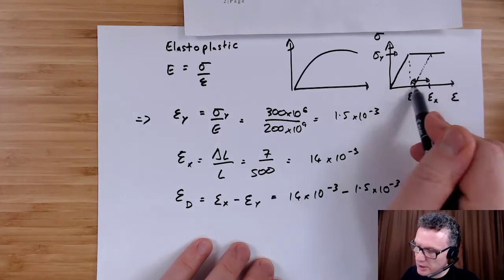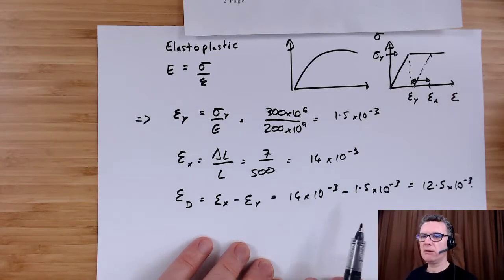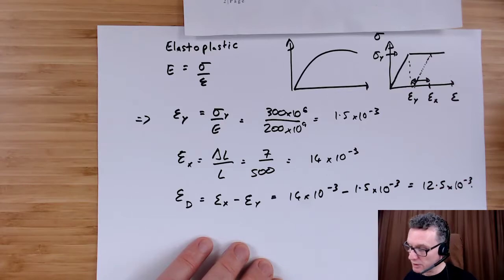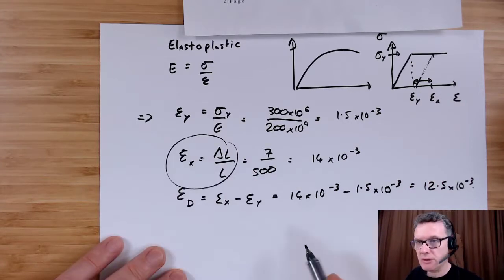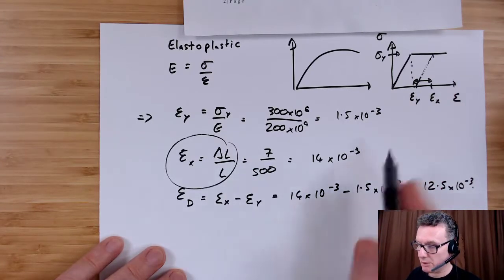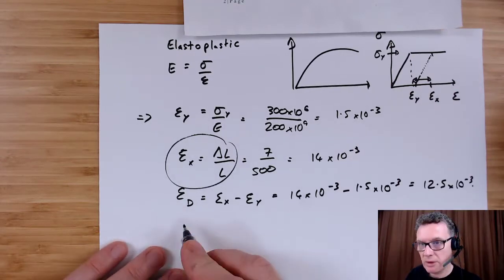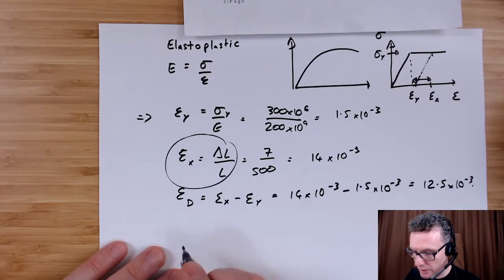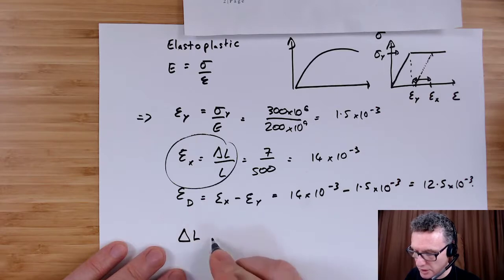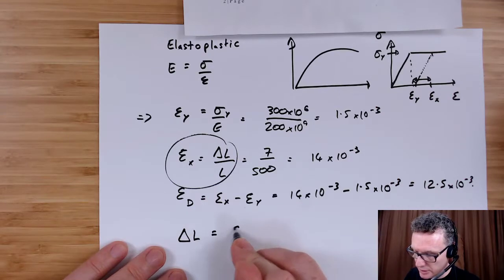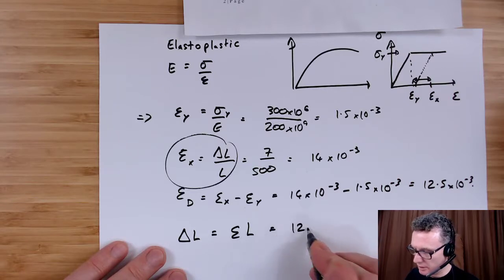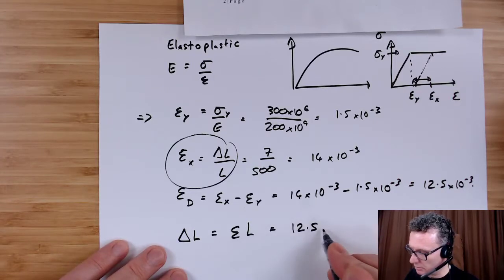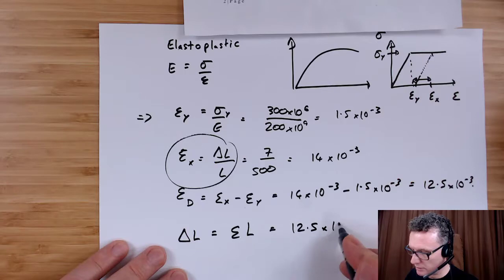So now we're here. Simply make the assumption that we can then reuse this equation to find out what the permanent damage is when we've released the load. So that will therefore be that the change in length—the change in length is the extension times the length.